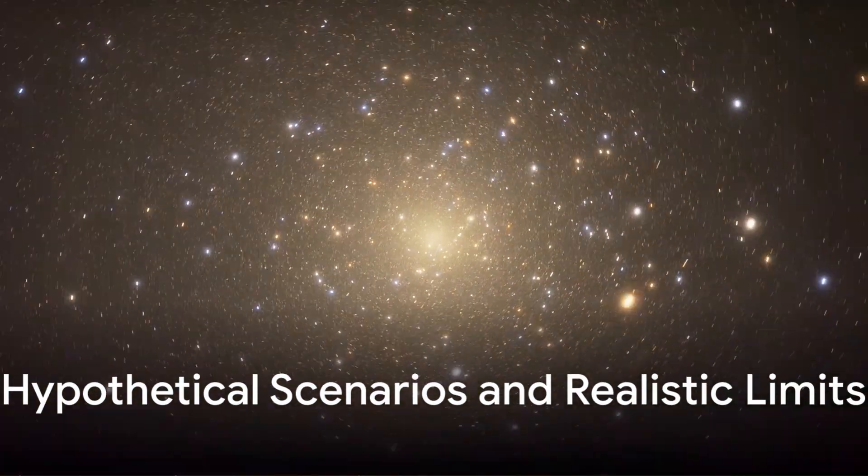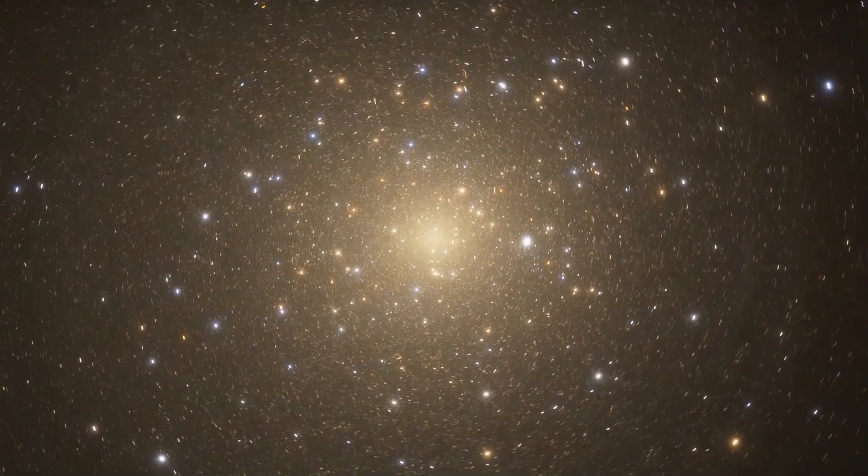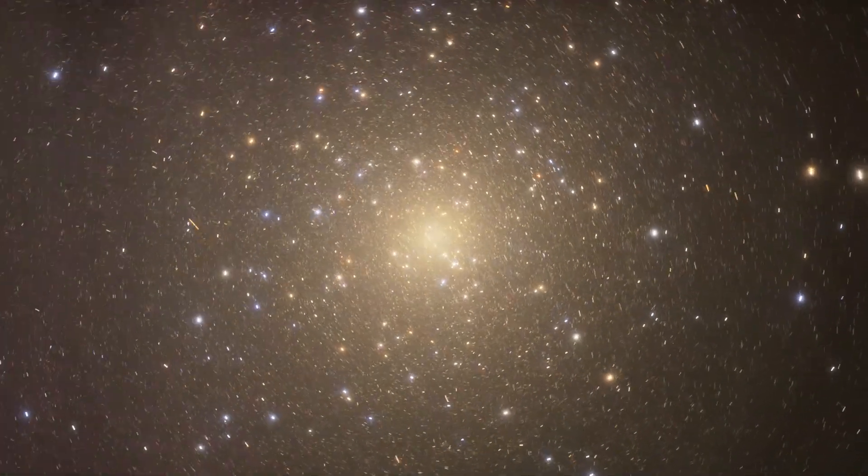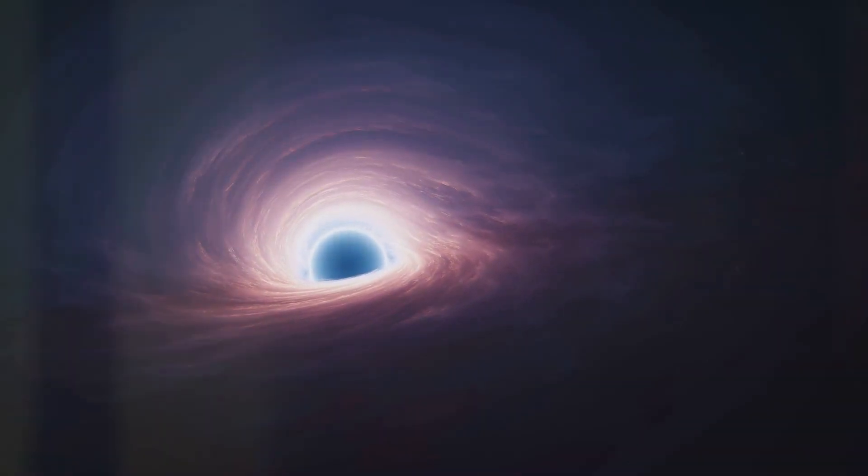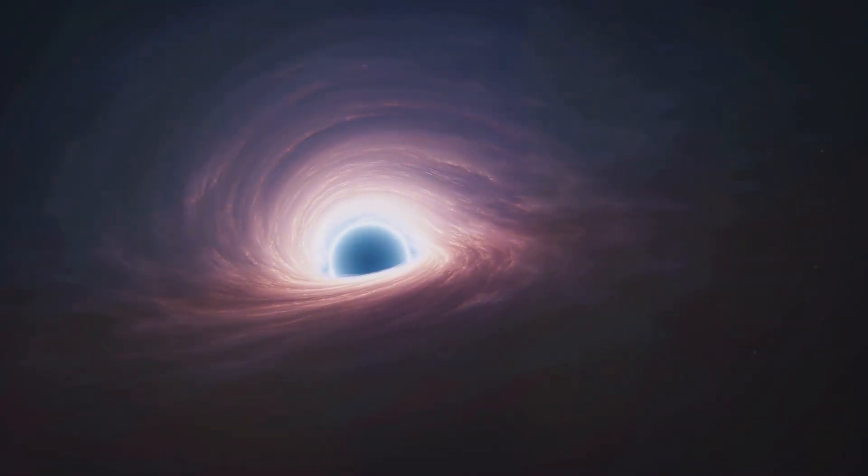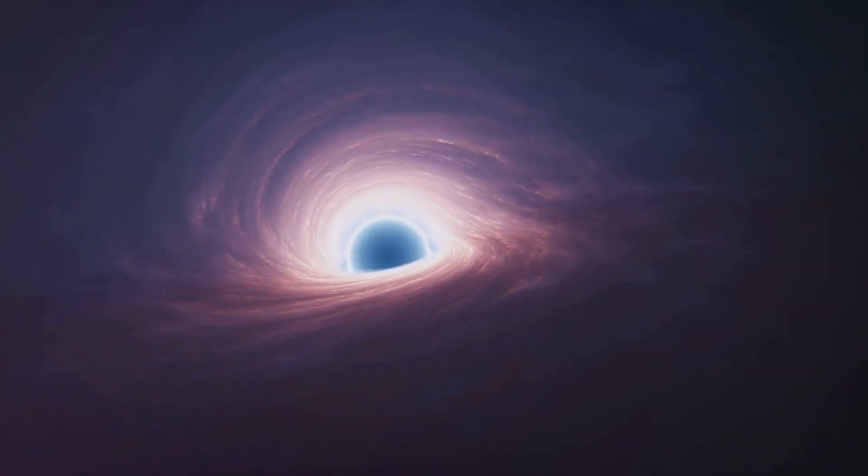As interesting as it is to consider what would happen if Sagittarius A suddenly disappeared, we must also explore the realistic limits of these scenarios. In reality, black holes can't just vanish. They can only lose mass through Hawking radiation, which occurs over incredibly long timescales.